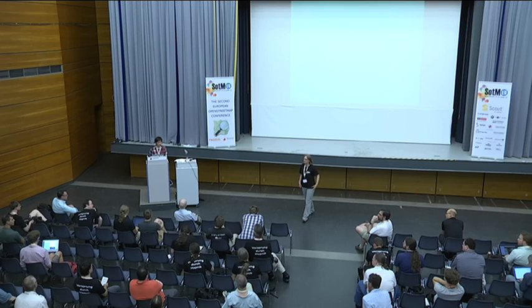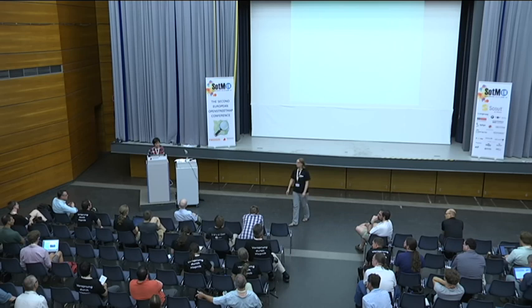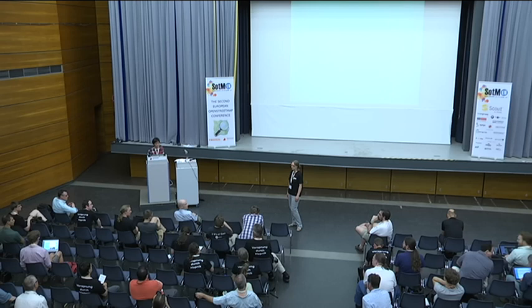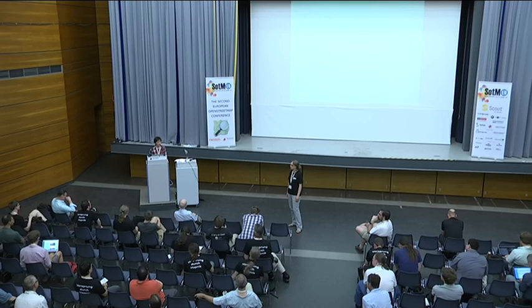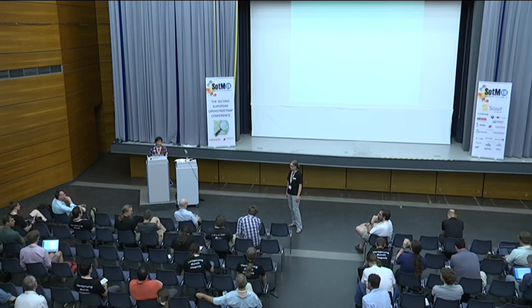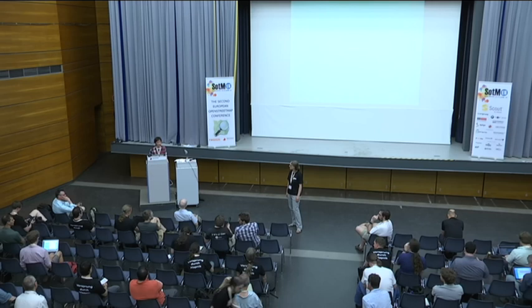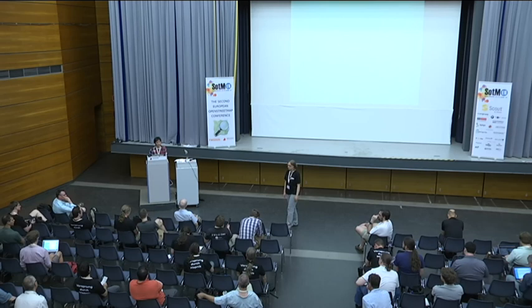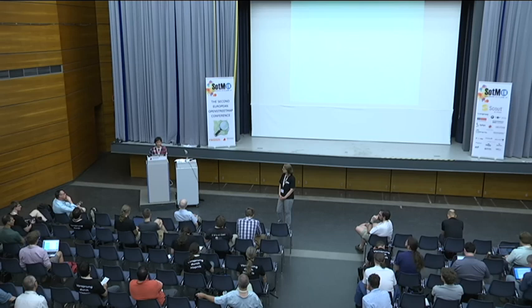Q: Are you aware of the Open Street View project, set up a few years ago with similar principles? Would it be possible to collaborate and import images they already have? A: Yes, I'm aware of Open Street View. We could potentially import some of their images, with permission from the original creators, and transport the data to Mapillary. Having more images is always helpful — you can extract more metadata and combine Mapillary images with Open Street View images. That can be an option.